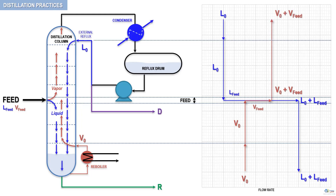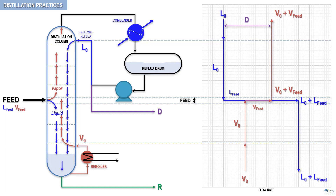At the top of the distilling column, the overhead vapor is condensed. Part of the condensed vapors is recovered and reintroduced back to the column as external reflux. This amount is referred to as L0. The remaining condensed vapors constitute the distillate, referred to on the graph as D. The distillate flow rate can be symbolically represented as the difference between the overhead vapor flow rate, V0 plus V_feed, and the external reflux flow rate L0.